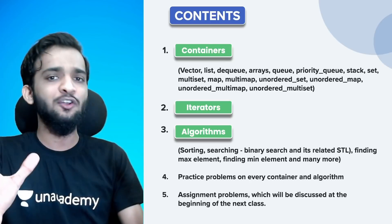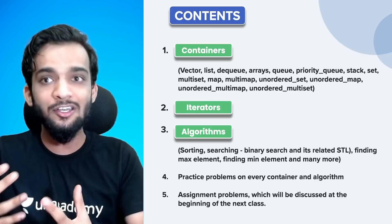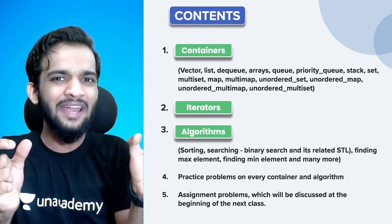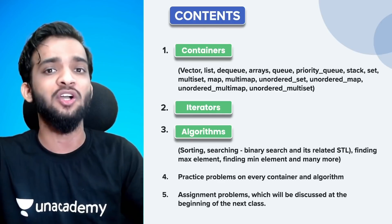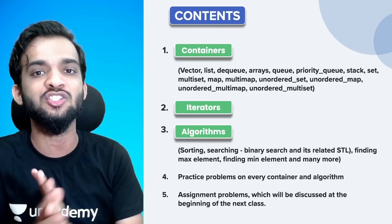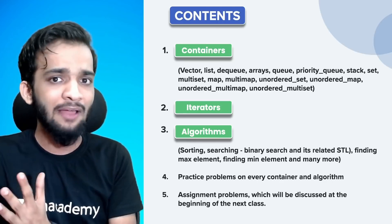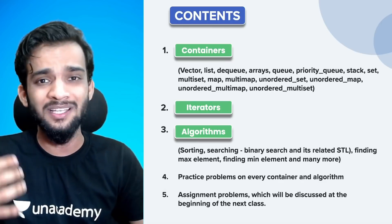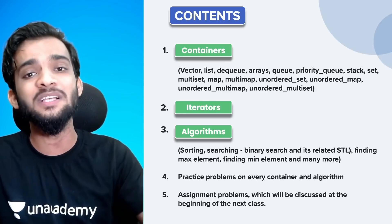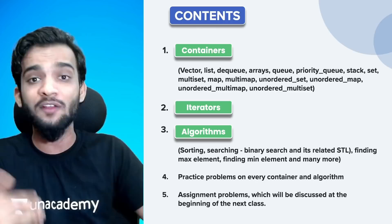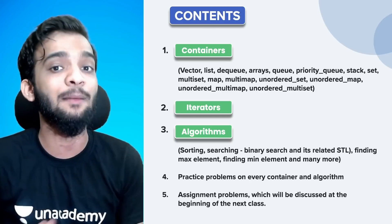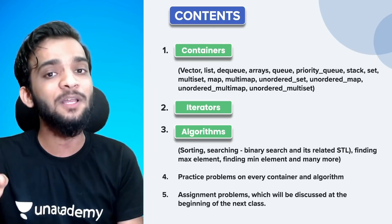The second specialty is iterators. Without iterators, you cannot actually iterate on a data structure. I'm going to teach you about iterators, but I'll also teach you a shortcut where you write a single word and can iterate over any data structure or any C++ STL container. Coming to the third point — algorithms. In competitive programming, things like binary search, finding a max element, finding a min element, and many other operations can easily be done in a single line using C++ STL. You don't have to write a full sorting or binary search implementation. I'm going to teach every algorithm present in C++ STL.